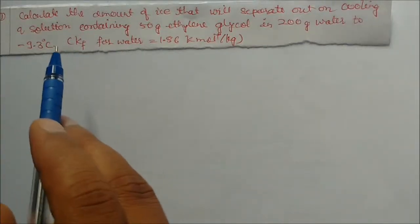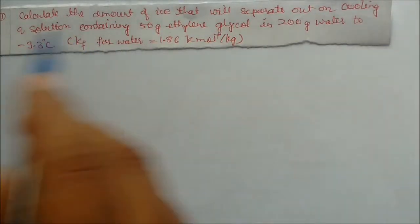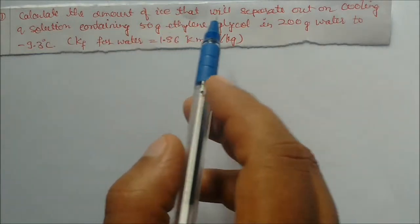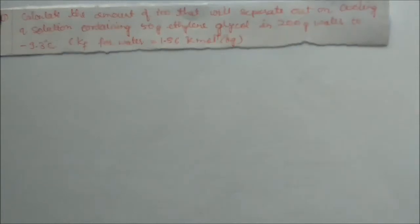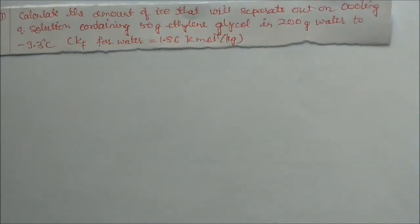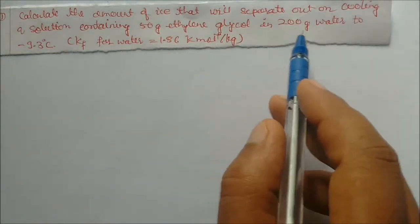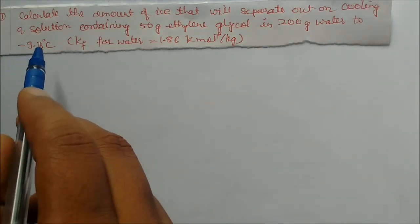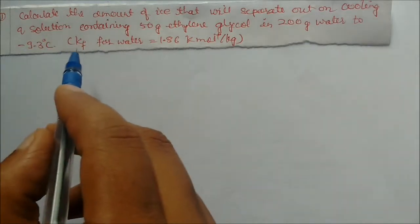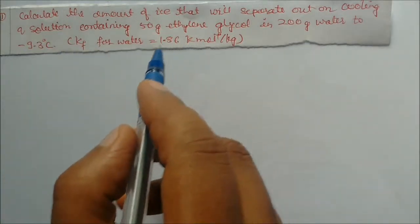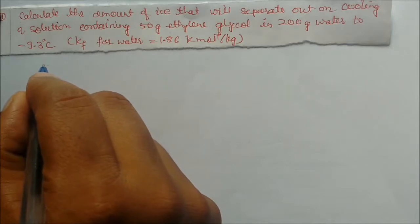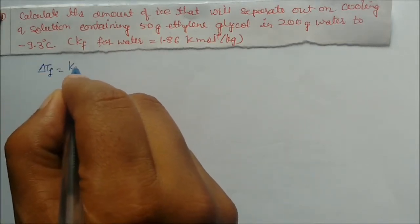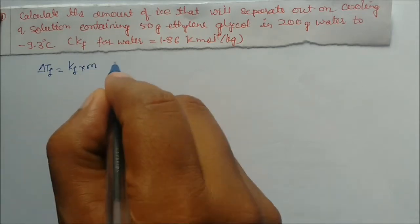We'll see the problem based on depression in freezing point. Calculate the amount of ice that will separate out on cooling a solution containing 50 grams of ethylene glycol in 200 grams of water to minus 9.3 degrees centigrade. Kf for water is given. We use the formula: delta Tf = Kf × m.